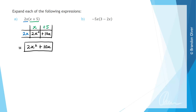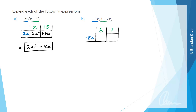You might want to pause the video now and have a go at part b before I complete it. For part b, we have minus 5x as one of the terms and that needs to be multiplied through the bracket 3 minus 2x. Setting up the grid, we put minus 5x on the side — keeping the negative sign — and 3 minus 2x along the top. Multiplying through: minus 5x times 3 is minus 15x, and minus 5x times minus 2x is plus 10x squared.